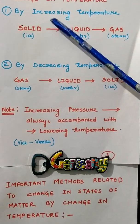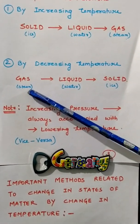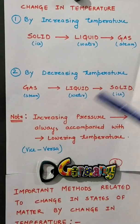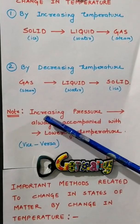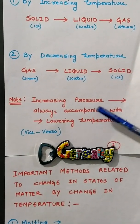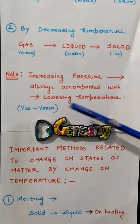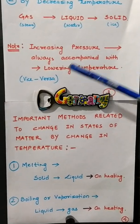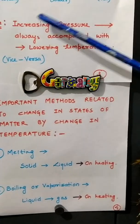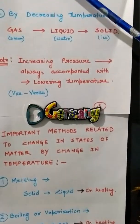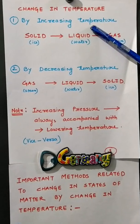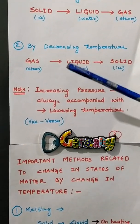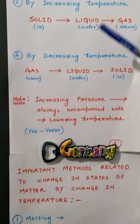By increasing or decreasing the temperature, we are changing the distance between the particles and thus changing the state. An important point: when we talk about increasing pressure, it is always accompanied by lowering of temperature, and vice versa. That is, with increasing temperature, the pressure is reduced, and when temperature decreases, pressure is increased. These always take place together.